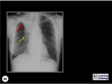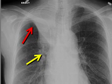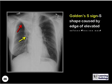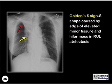What is the name of this sign? This is Golden's S-sign, or the reverse S-sign of Golden, which is an S-shape caused by elevation of the minor fissure and a hilar mass producing right upper lobe atelectasis.